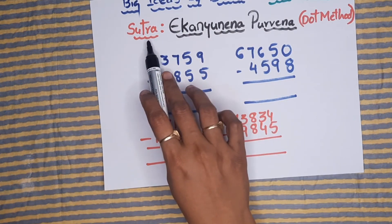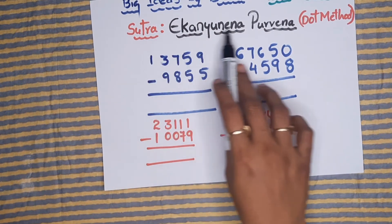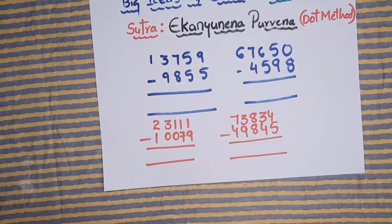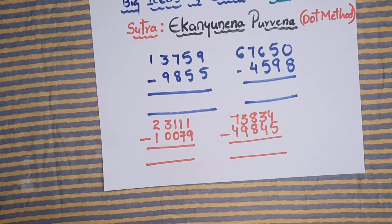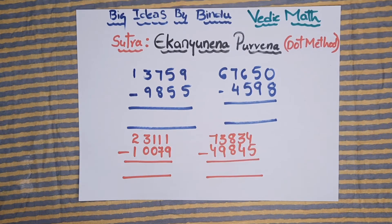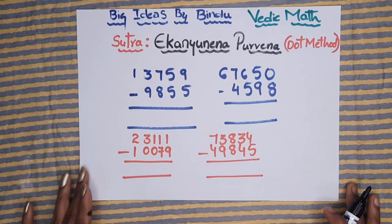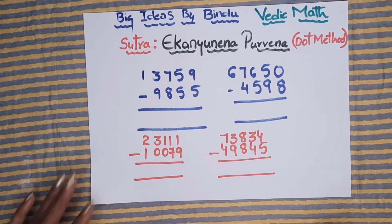Again, the sutra name is Ekanyunena Purvena, which means dot method subtraction. If you are watching my channel for the first time, please do like, share, and subscribe to support the channel. Now let's move into the concept.